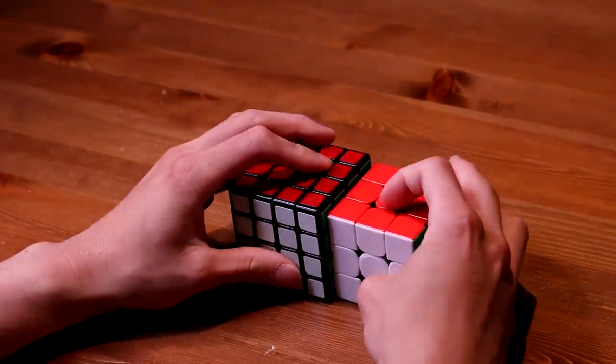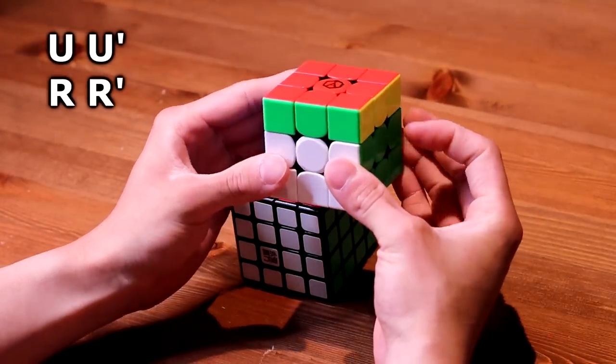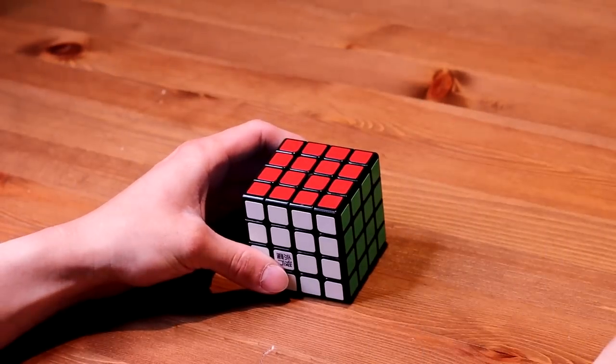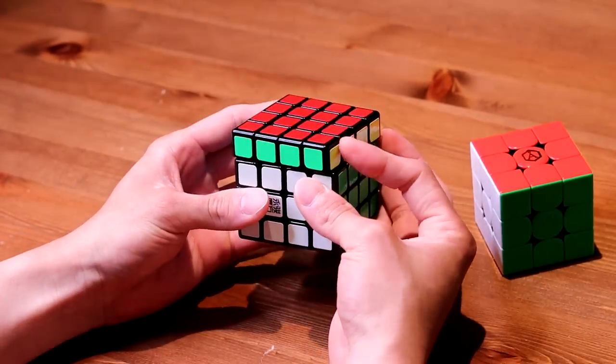In the 3x3 tutorial you had the U, U' and the R, R' notations for these algorithms and it's the exact same for the 4x4.